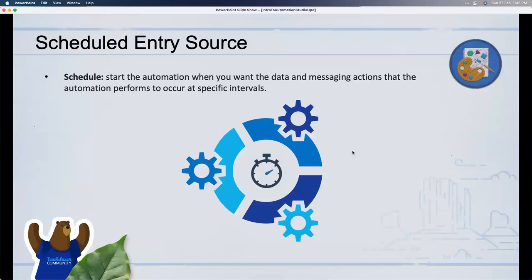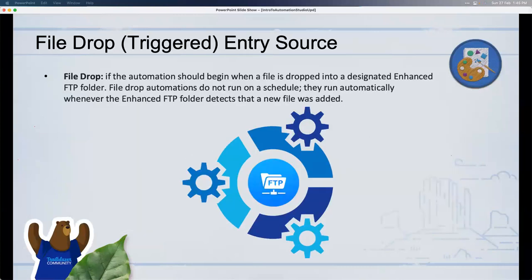The second entry source, besides Scheduled, is File Drop — previously known as the 'triggered' entry source. This triggers a workflow to start when a particular file is dropped into a specific folder in Marketing Cloud's Enhanced FTP. Every business unit in Marketing Cloud has an Enhanced FTP site associated with it. Admins get credentials for it — it's a unique, secure FTP given to each business unit.